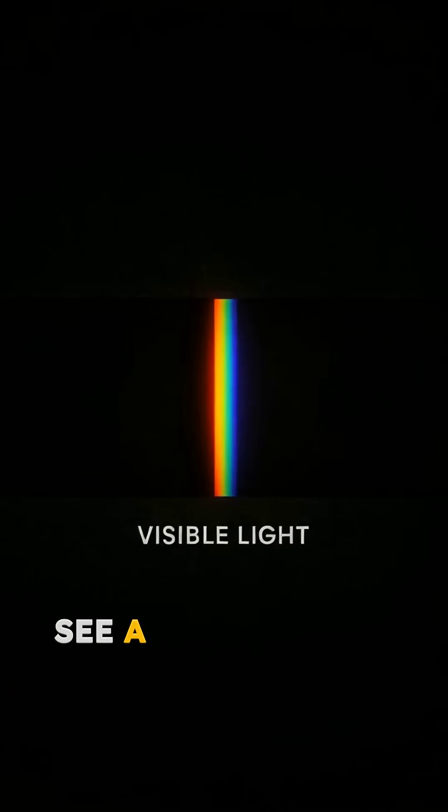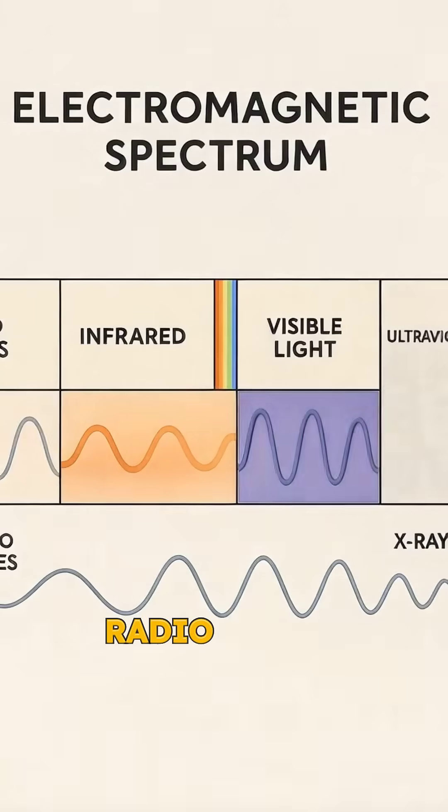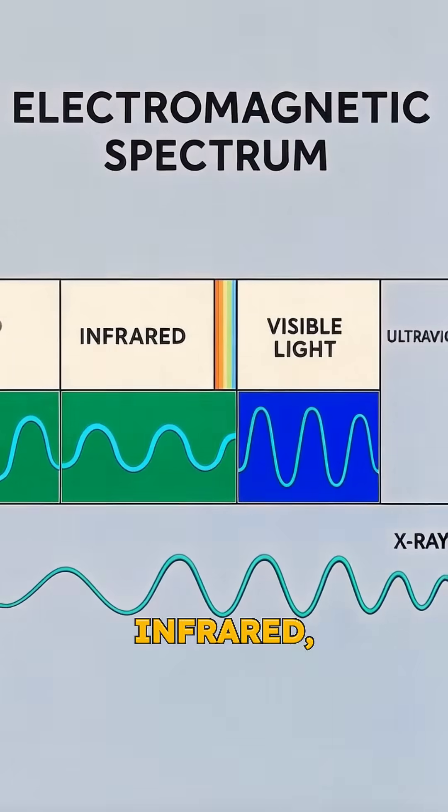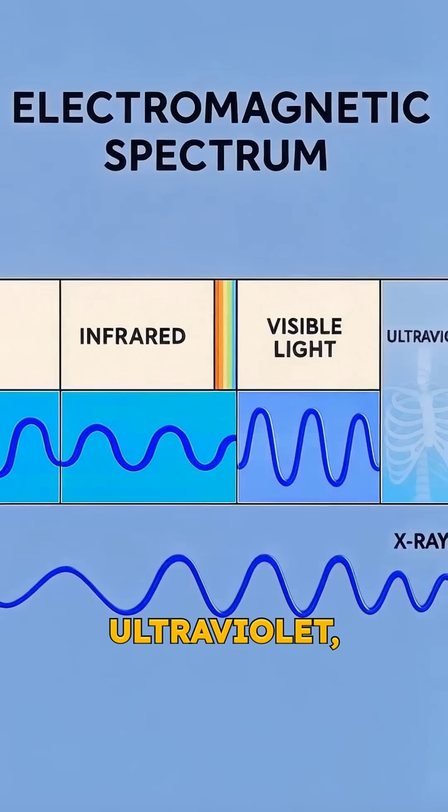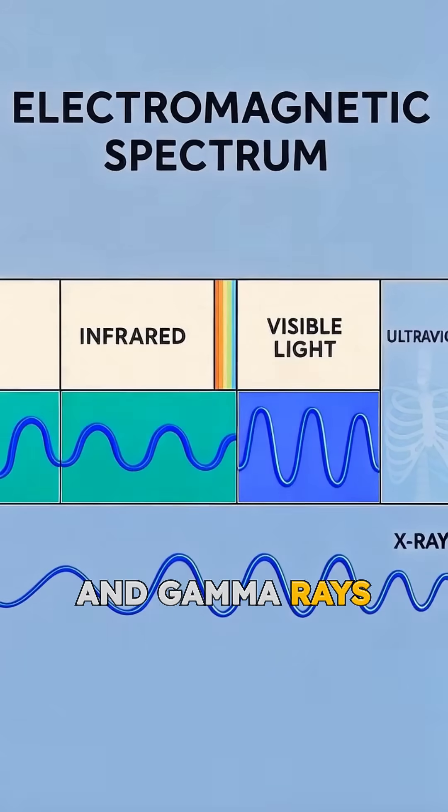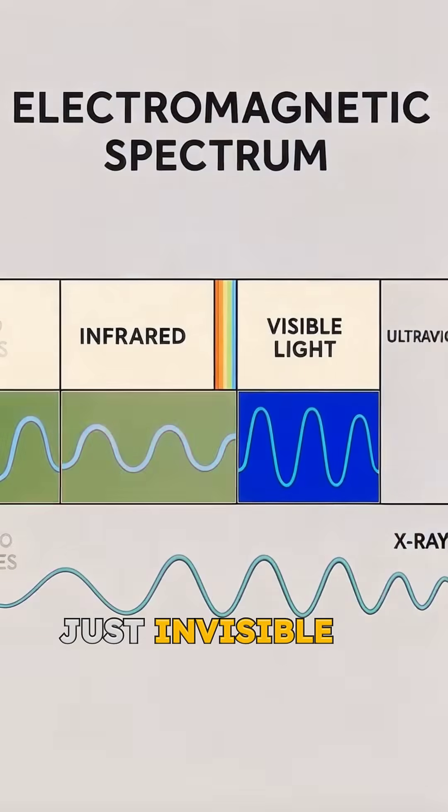Your eyes can only see a microscopic slice of all the light that exists. Radio waves, microwaves, infrared, ultraviolet, x-rays, and gamma rays are all light, just invisible to us.